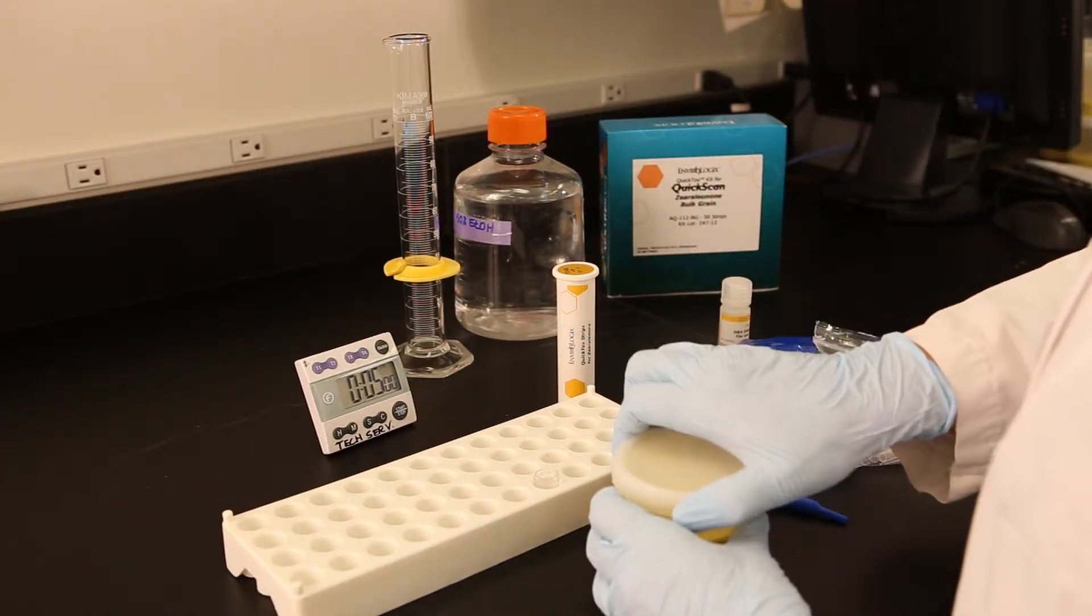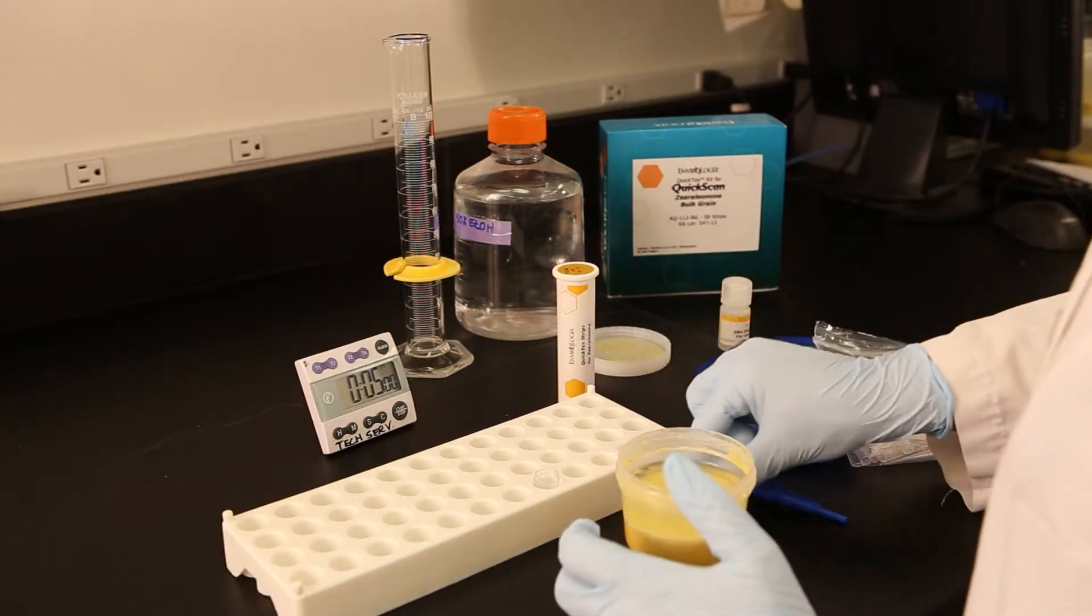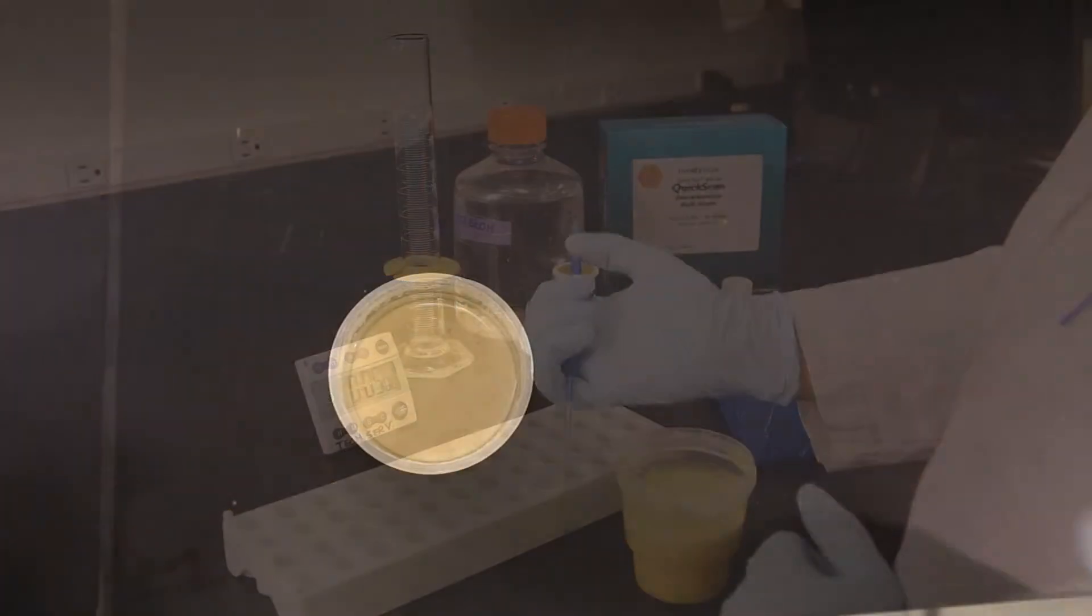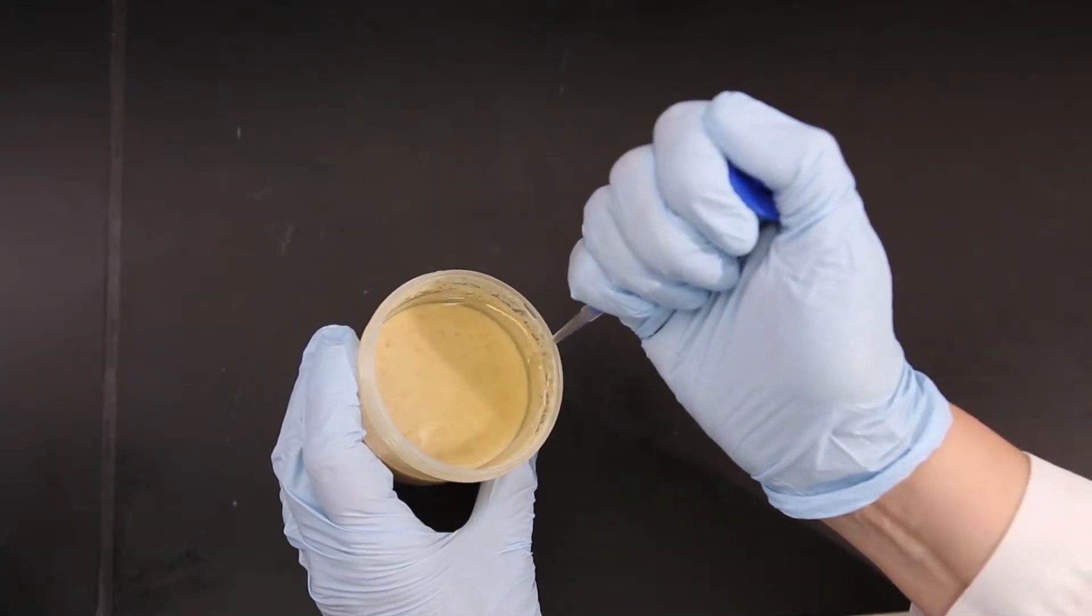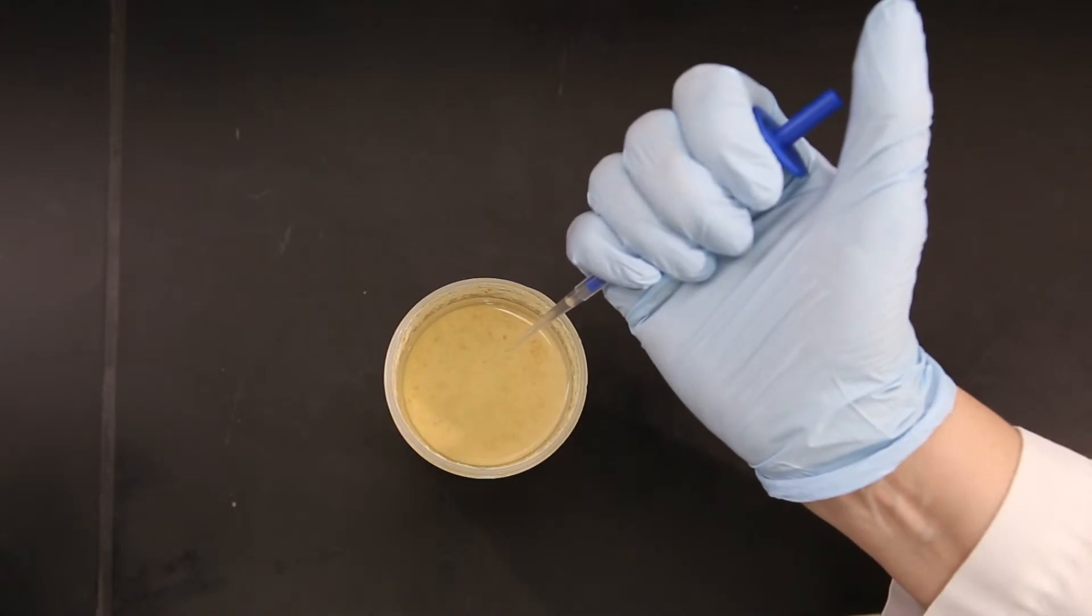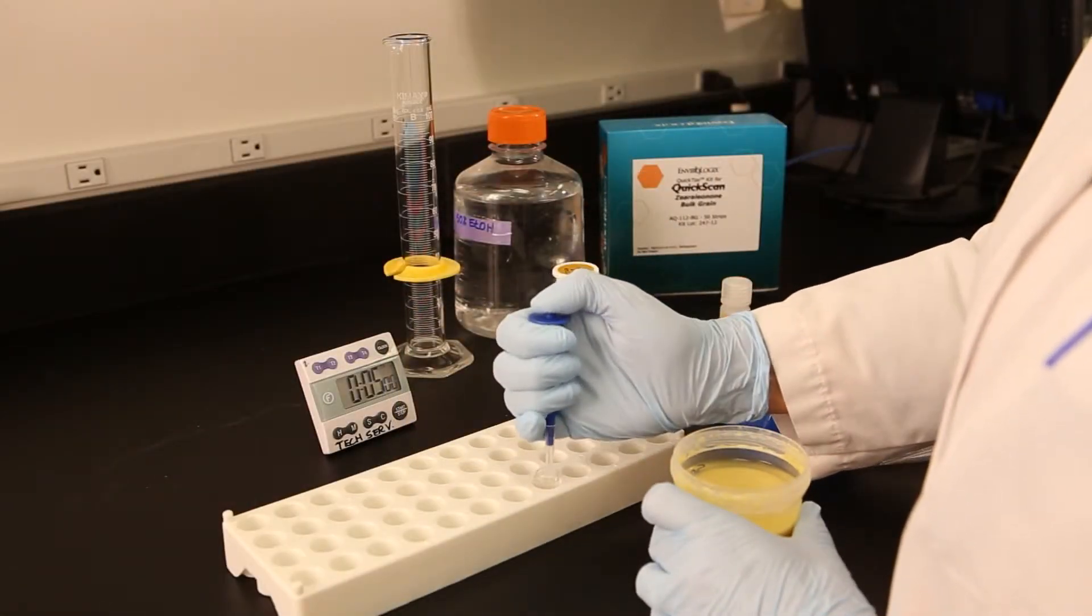With a fresh pipette tip, pipette 100 microliters of sample from the top layer of the settled extract into the reaction vial. Pipette settled extract at a 45 degree angle to avoid foam and particulates. Mix well with pipette by drawing liquids up and down in the pipette tip.